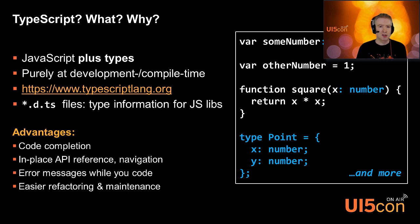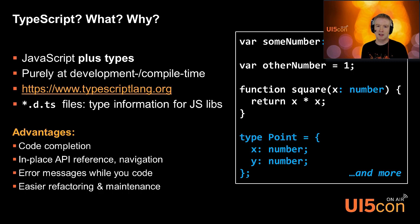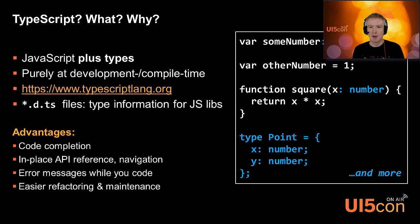When you have a JavaScript library that has not been developed in TypeScript, there's no definition of the types. This is what the d.ts type files are for — you can provide type definitions for JavaScript libraries that have no type information. This has been done for many libraries, and now also for UI5.